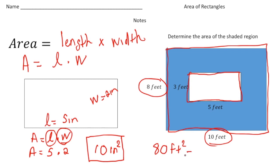And now we're going to subtract the area of the small. So 3 times 5 is 15. So the area of the small is 15 square feet. So 80 square feet take away 15 square feet will give us our answer of 65 square feet. And there it is.